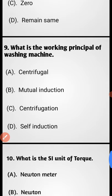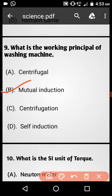Question number 9: What is the working principle of washing machine? Option A: Centrifugal, Option B: Mutual induction, Option C: Centrifugation, Option D: Self induction. Answer is Option C, centrifugation.